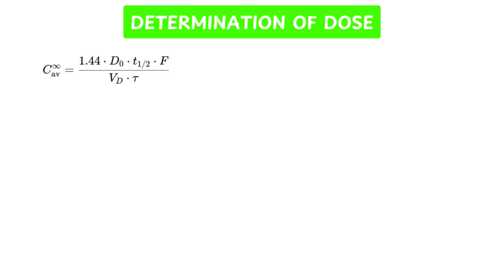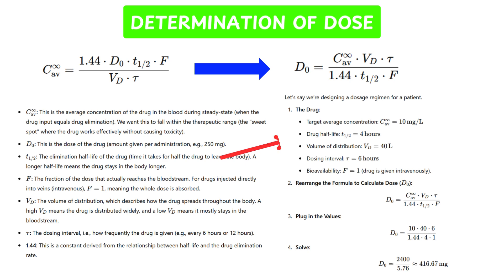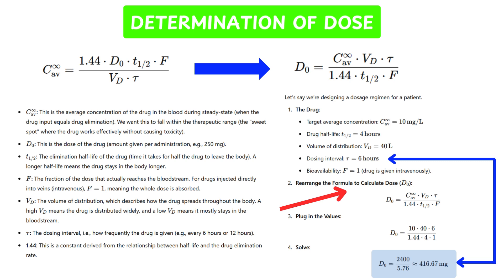Now let's talk about determination of dose. The dose of a drug can be calculated using a specific formula. Since we are calculating dose, we isolate D0 from the equation, and after rearrangement the formula takes a new form. Let's calculate the dose: we are designing a dosage regimen for a patient using the parameters we calculated. Remember, dosing interval should be calculated first, then dose — because having the dosing interval value makes it easy to calculate the dose. Plugging in all values, we get dose D0 = 416.67 mg, with dosing interval tau = 6 hours. Conclusion: approximately 416.67 mg of drug every 6 hours should be given.